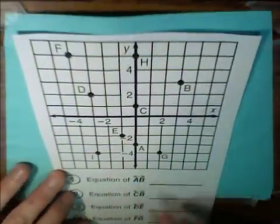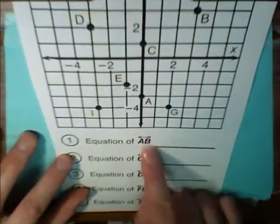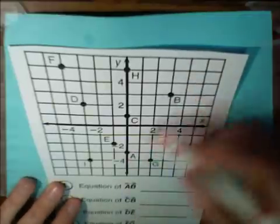So let's try a few examples. So here we have a number of points, and the first problem says find the equation of AB, which means the line that passes through point A and point B.